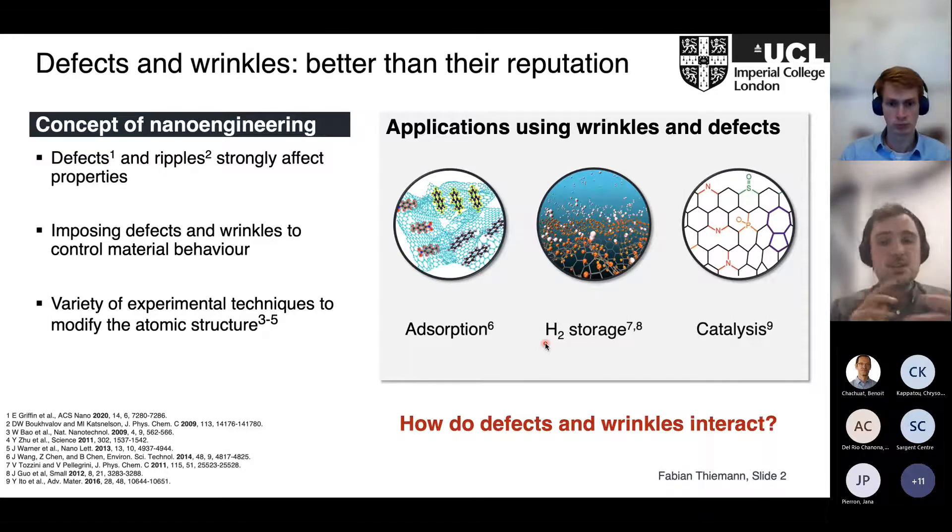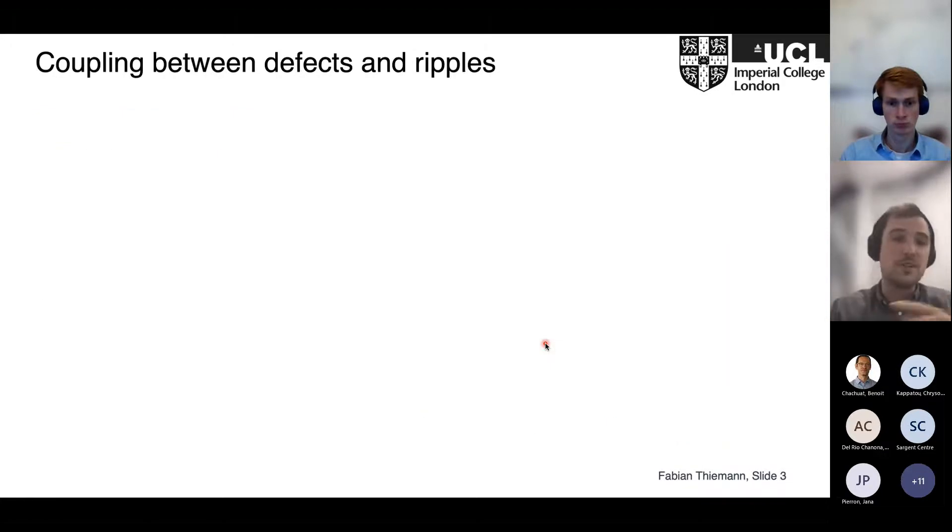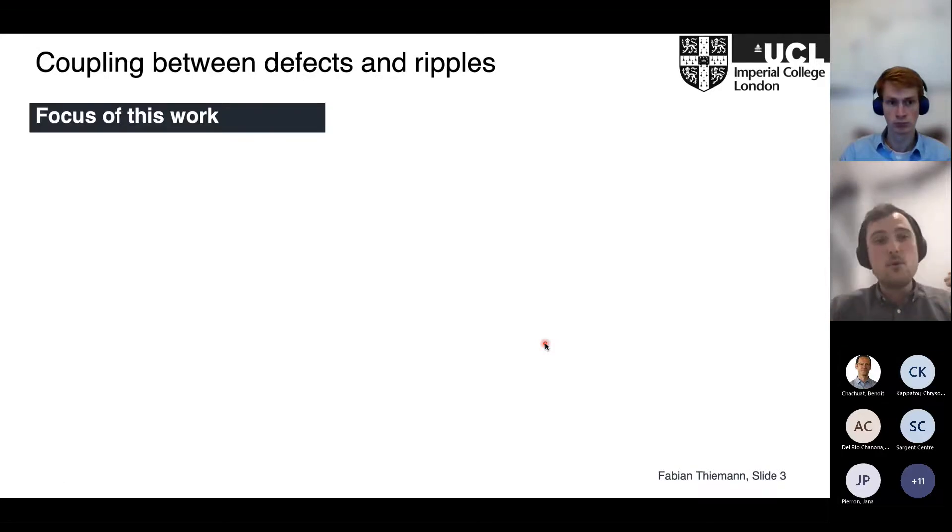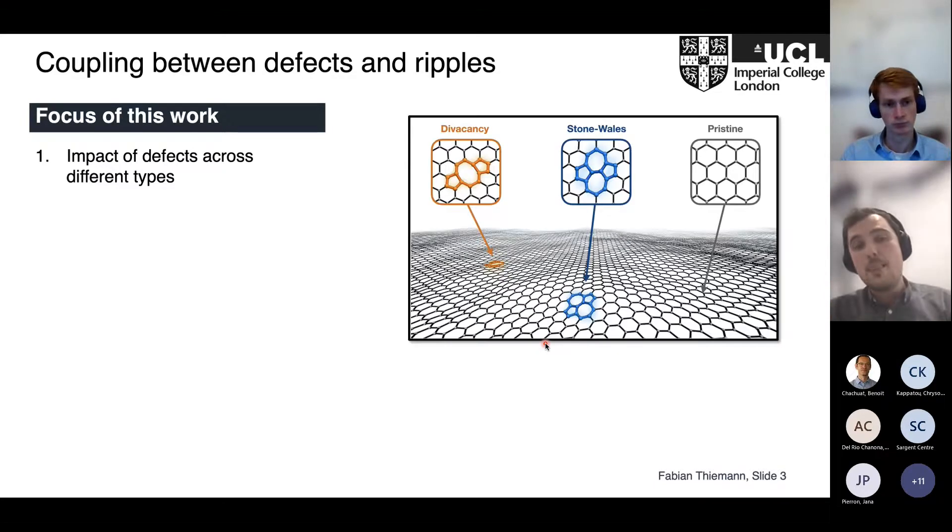To push the application side forward and really make this structurally modified graphene a good candidate for these applications, we need to understand how defects and wrinkles affect each other and how we can basically nano-engineer this problem backwards. This talk is mainly about the coupling between defects and ripples. We focus on three important, fundamental questions which haven't been answered yet in the literature. The first one is: how does the impact of a defect vary across different types?